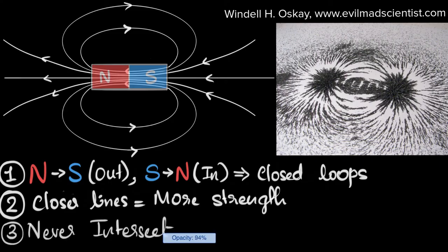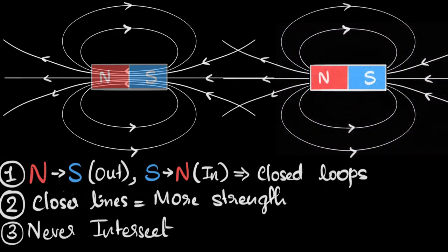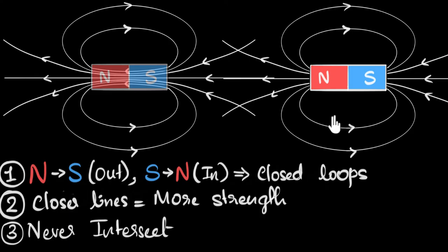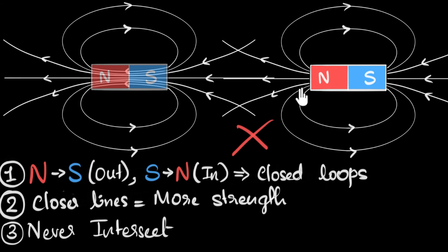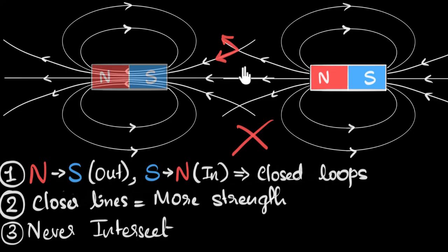Another important property is that magnetic field lines will never ever intersect. If we brought another magnet into the picture, you might think the field lines of the two magnets would intersect — but that won't happen. At the point of intersection, a magnetic compass would need to point in two directions at the same time, which doesn't make physical sense. For that reason, field lines will never intersect; instead, they change shape in a complicated way to ensure they never cross.